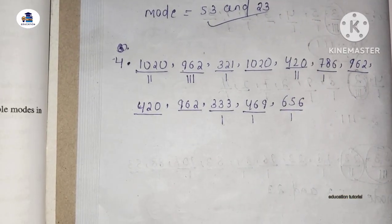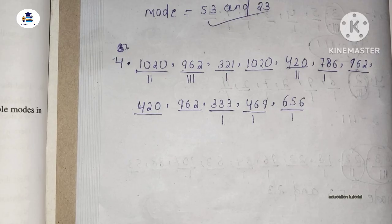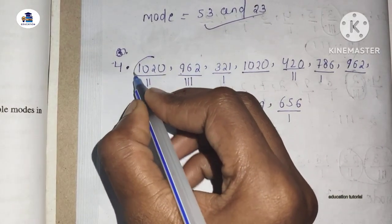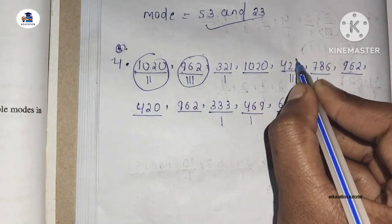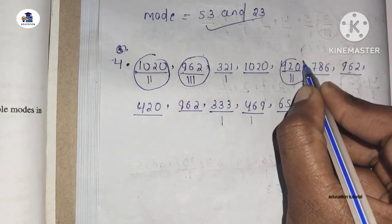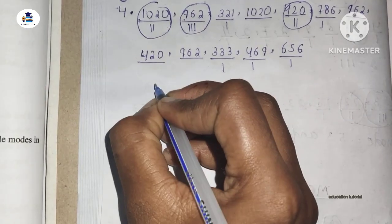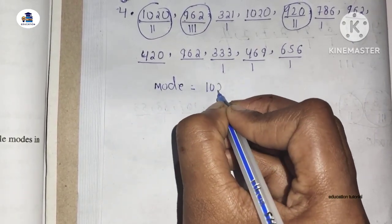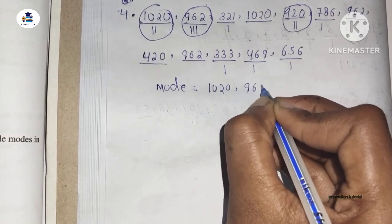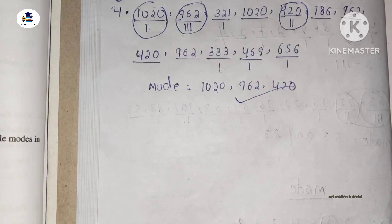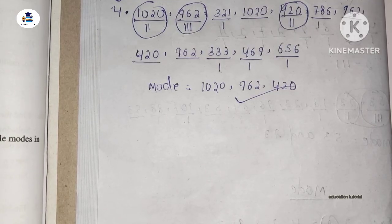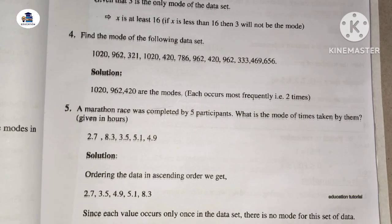The mode is determined. The mode is the value that appears most often. Let's look at question number 5.